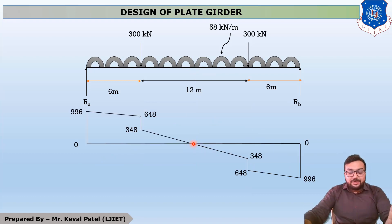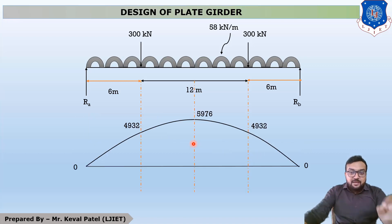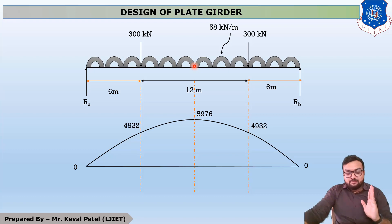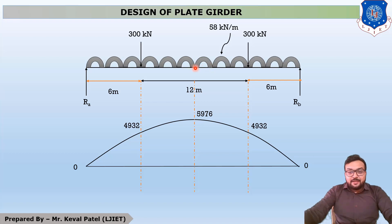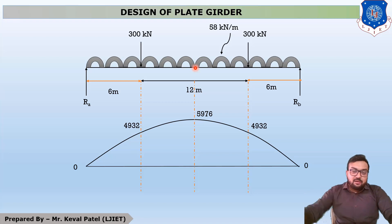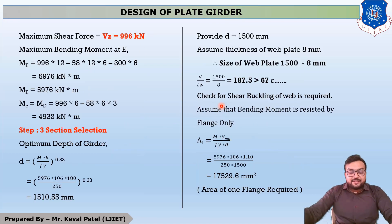At point E (midspan, 12 m), shear force is zero — this is the point of contraflexure where bending moment is maximum. BM at E = RA × 12 − (58 × 12 × 12/2) − (300 × 6) = 996 × 12 − 4176 − 1800 = 11952 − 5976 = 5976 kN·m.